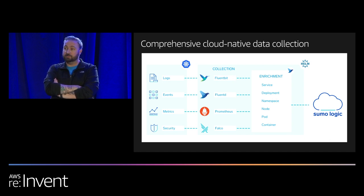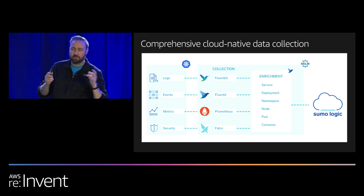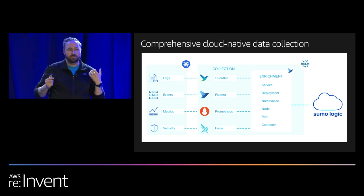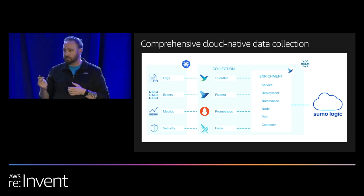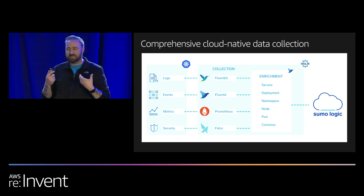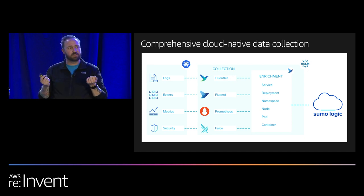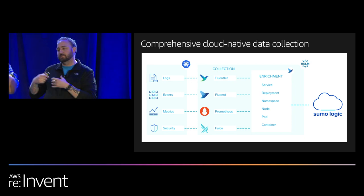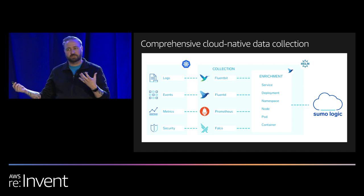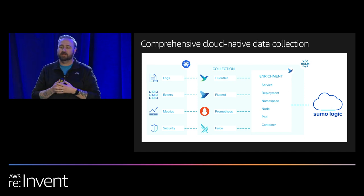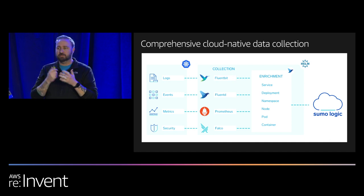For security, we deploy Falco — an open source project originally developed by Sysdig — which gives you out-of-the-box security insights on the health of your Kubernetes cluster. A key part of our collection process is the enrichment piece: all streams — logs, metrics, events, security events — have varying degrees of metadata, and our enrichment pipeline ensures every signal has the same consistent metadata. This gives us a common language across different streams. You can look at a metric, pivot to a log, pivot from an event back to a metric — because you have a common set of metadata like pod, container, namespace, cluster, and labels. We package this all up as a Helm chart: Helm install Sumo Logic and you're done.